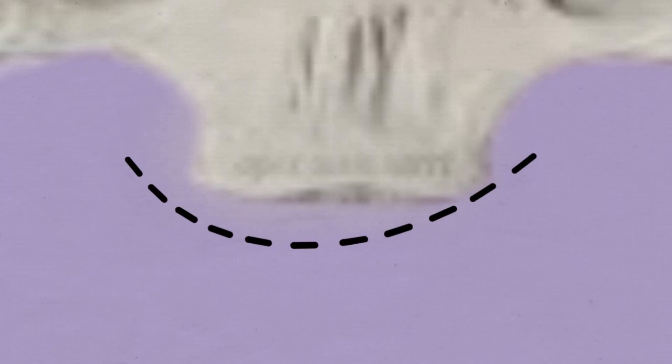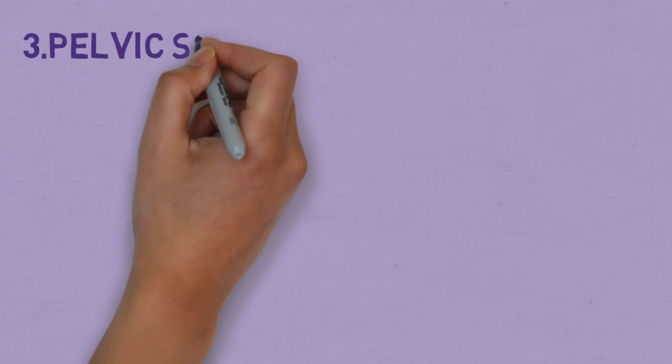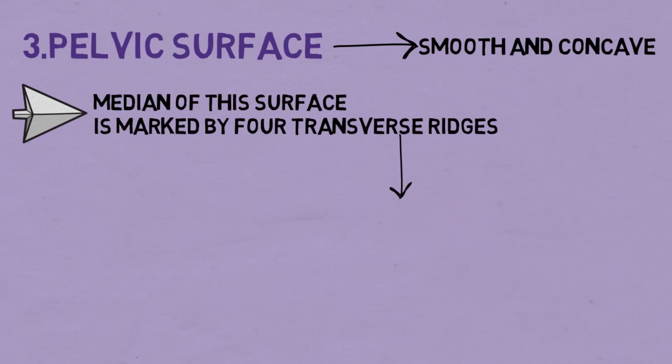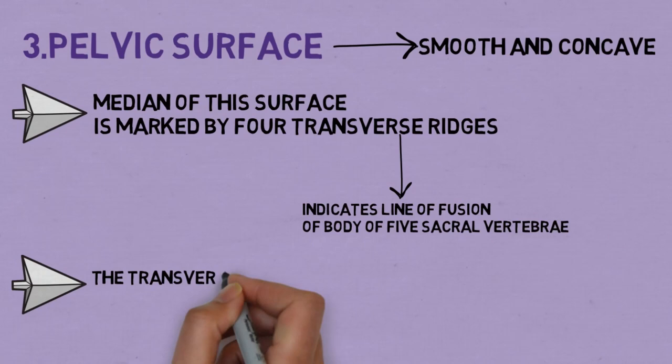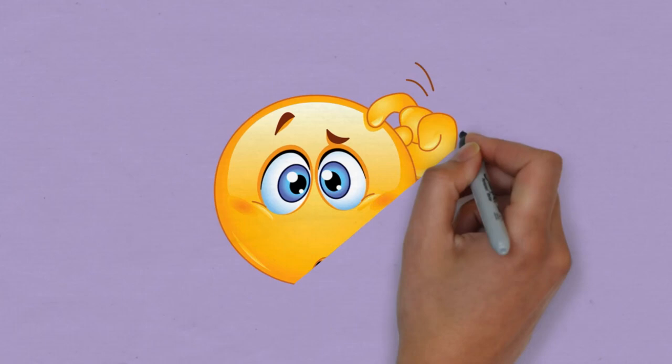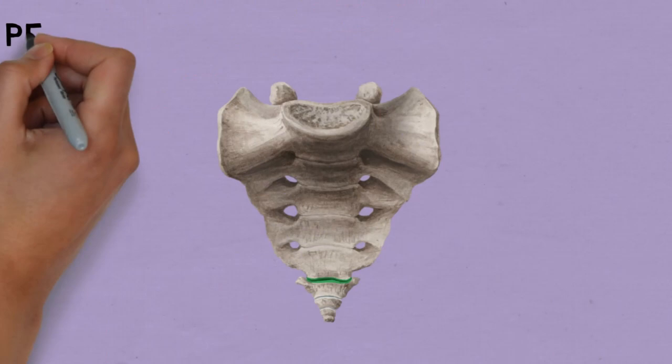Now we come to the third aspect of sacrum — the pelvic surface. Firstly, this surface is smooth and concave. The median of this surface is marked by four transverse ridges, and these transverse ridges indicate the line of fusion of the bodies of the five sacral vertebrae. The transverse ridges end on each side at the anterior sacral foramen, and these foramen communicate with the sacral canal. This is the pelvic surface of sacrum.